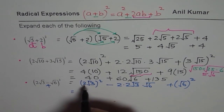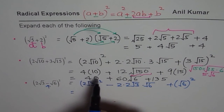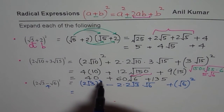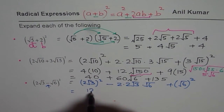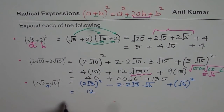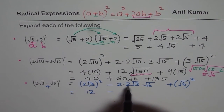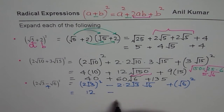Square of 2√3 is 4 × 3 = 12. Then 2 × 2 = 4 and √6 × √3 = √18, so we have 4√18. And (√6)² = 6. So we have 12 - 4√18 + 6.